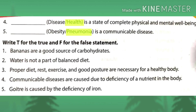Now we will see True or False. First: bananas are a good source of carbohydrates — true. Fruits like bananas and mangoes are very good sources of carbohydrates. Second: water is not a part of a balanced diet — false. Along with the five components of food, water and roughage are also included in a balanced diet.